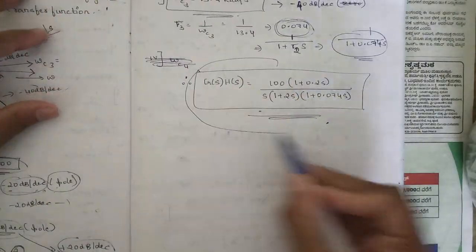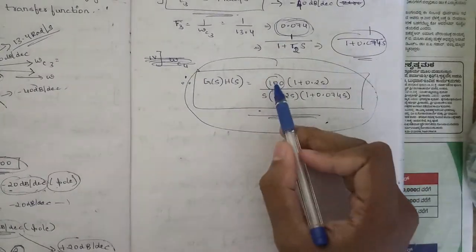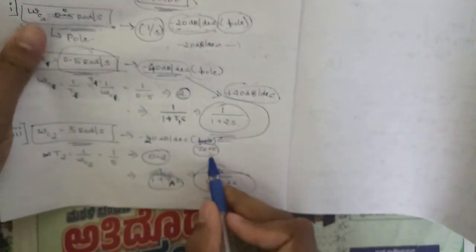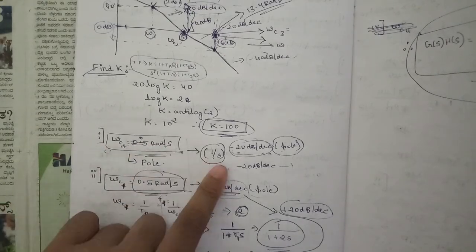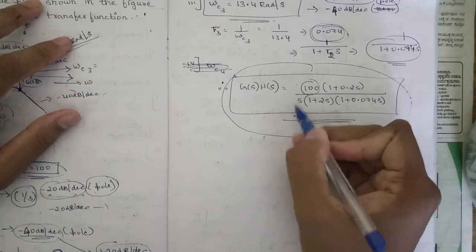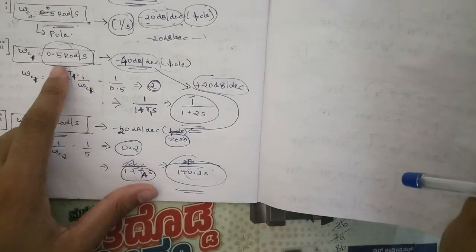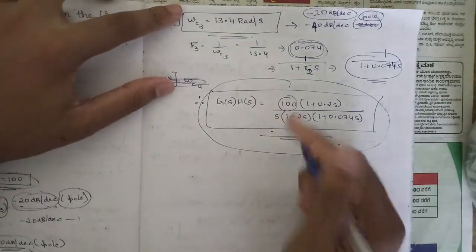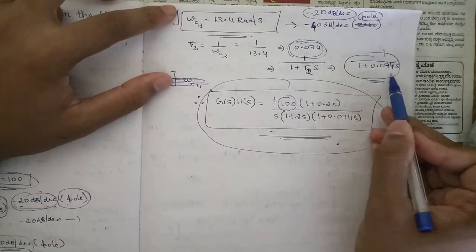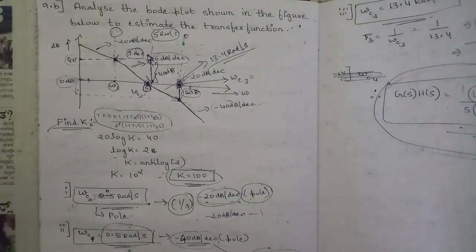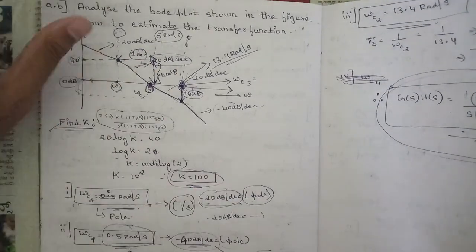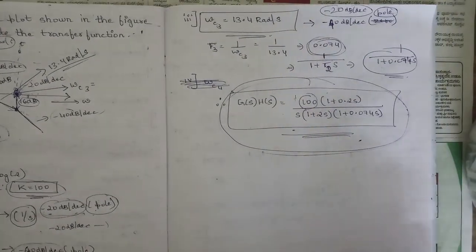Now we write all terms as the complete transfer function. K = 100; the zero gives (1 + 0.2s) in the numerator; the pole at the origin is 1/s; the pole at 0.5 rad/s gives 1/(1 + 2s); and the pole at 13.4 rad/s gives 1/(1 + 0.074s). Therefore the final transfer function is: G(s) = 100(1 + 0.2s) / [s(1 + 2s)(1 + 0.074s)]. This was a tricky yet straightforward problem once you carefully analyze the Bode plot.